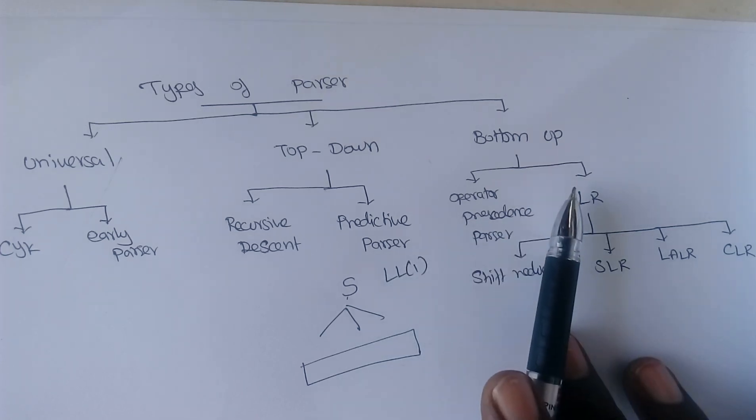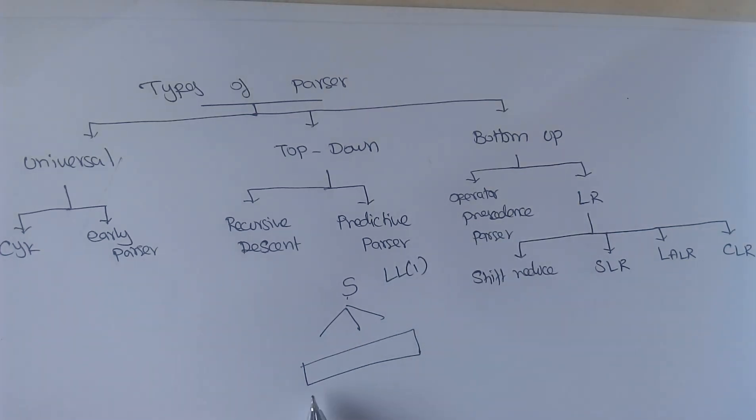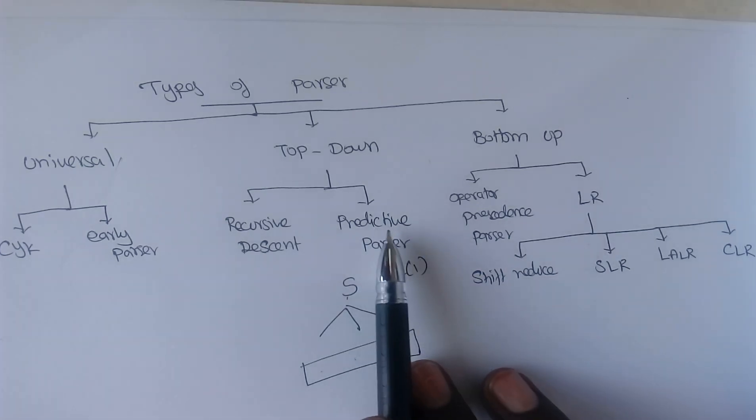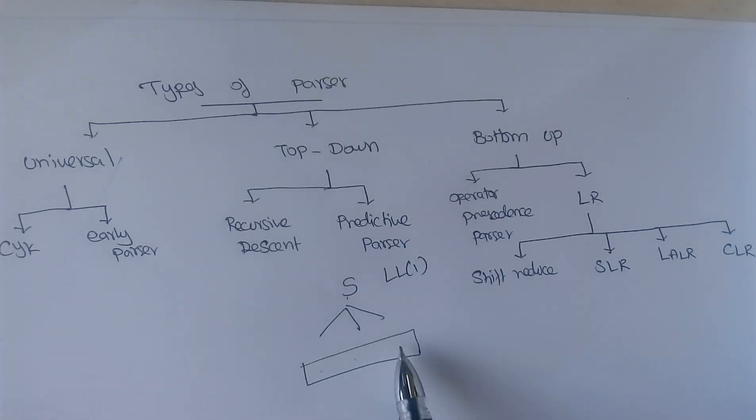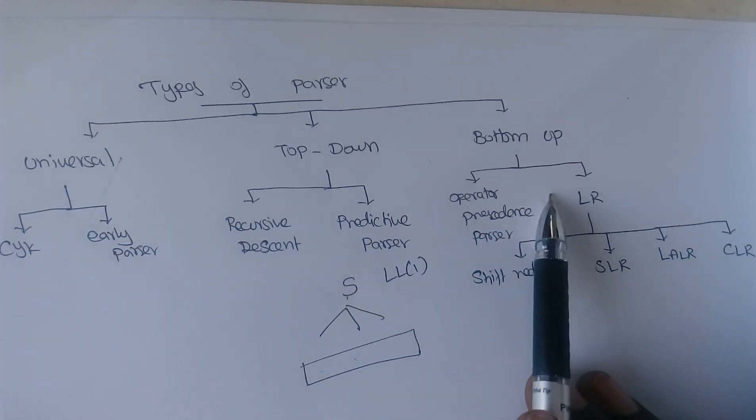And bottom-up parser is the reverse of top-down parser. We start from the input symbol and we keep on reducing it. Whereas in case of predictive parser, we substitute it and derive something, bottom-up parser goes with reduction. So we combine some two elements, substitute some productions over there, and finally we derive to the starting symbol. So that is called a bottom-up parser.